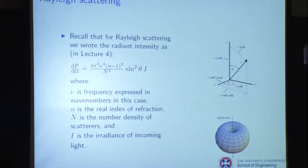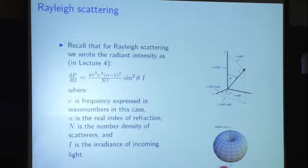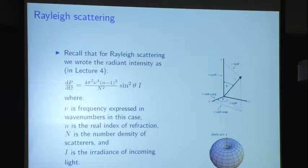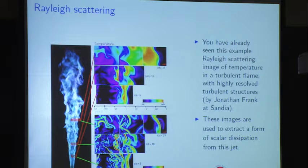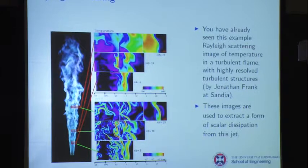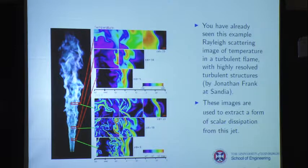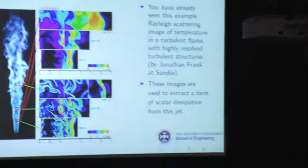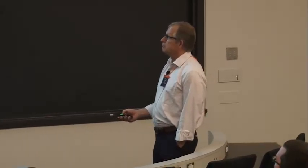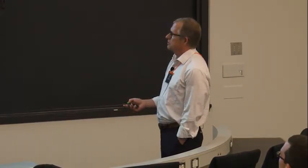For Rayleigh scattering, we have this expression for the power emitted into different solid angles where nu is the frequency, n is the index of refraction, number density of scatterers, and so on, and we get this torus-shaped scattering pattern. This result is from Jonathan Frank at Sandia - it's planar Rayleigh imaging of temperature assuming constant pressure, which is fine in this case. He purposely mixed the gases so that all gas mixtures across this flame had roughly the same Rayleigh cross-section, so he didn't have to worry about radical changes in Rayleigh cross-section across the flame. These are some of the best Rayleigh results I've seen.